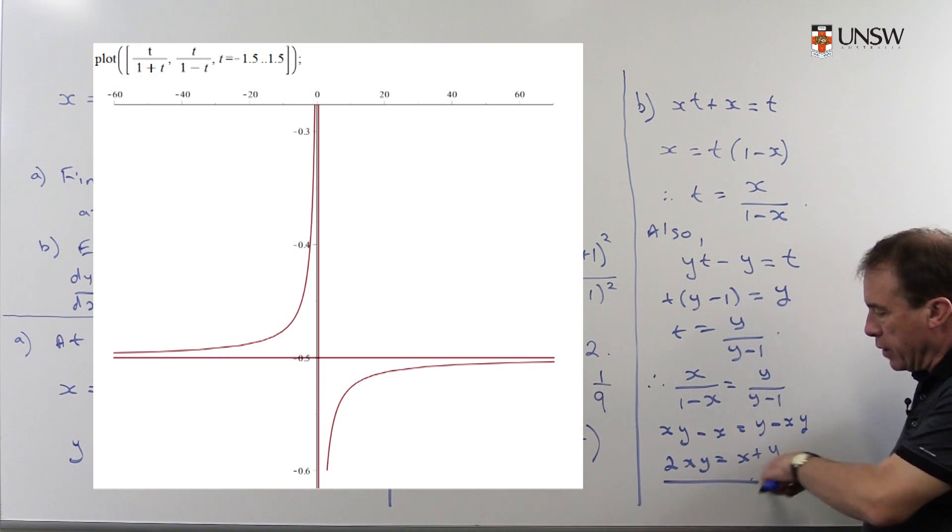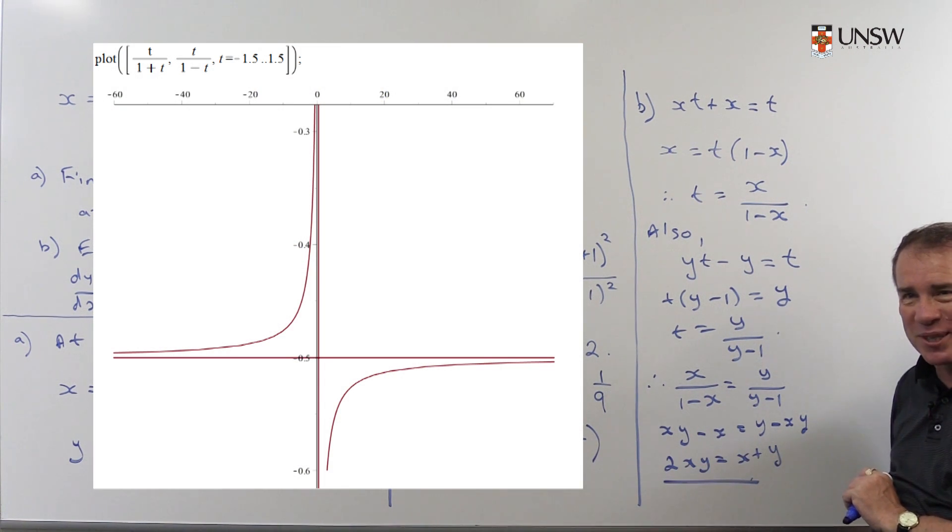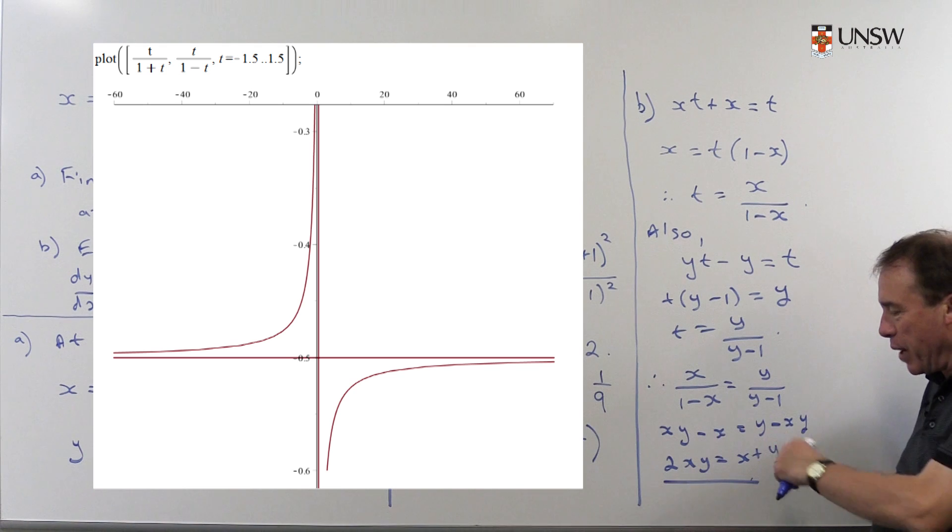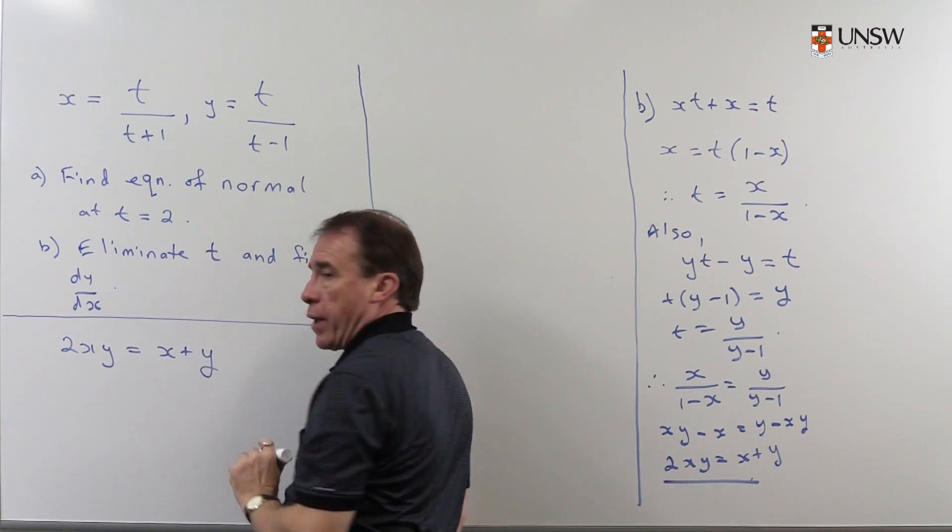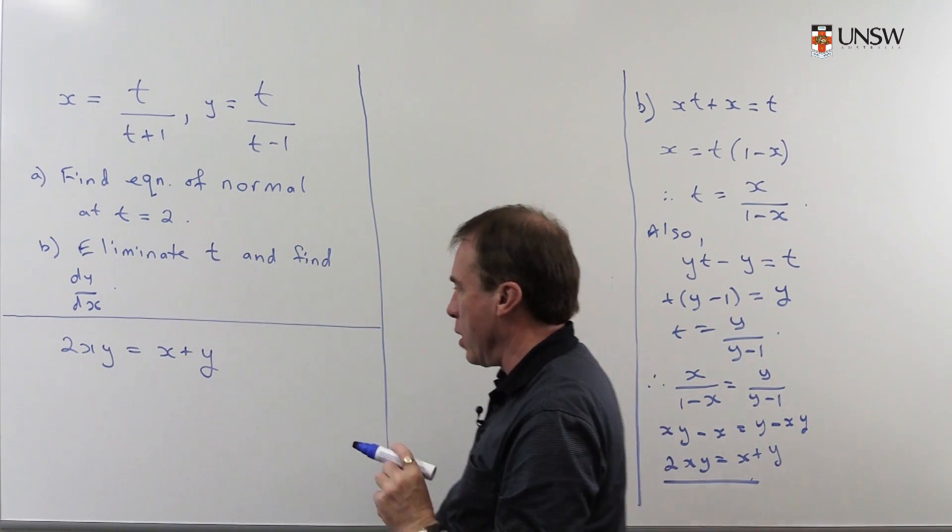By the way, you probably won't recognize, because I don't, exactly what this curve looks like. Again, you get Maple to draw this. This is implicitly defined. So after eliminating t from these two equations, we saw that that was the Cartesian equation.